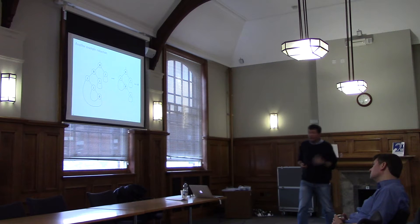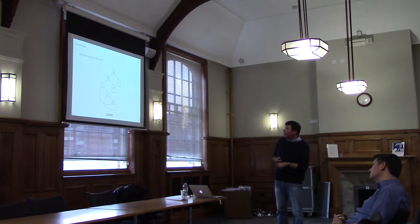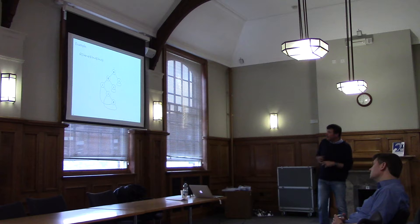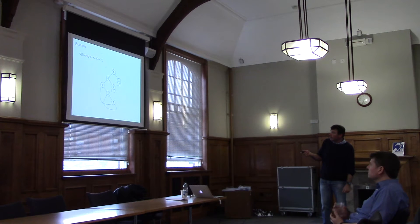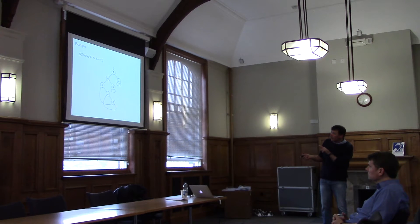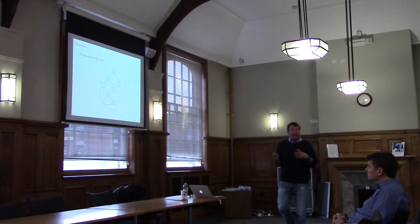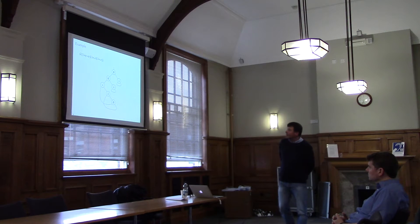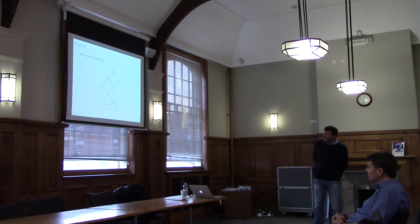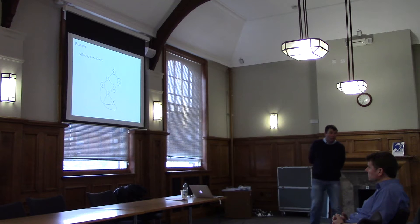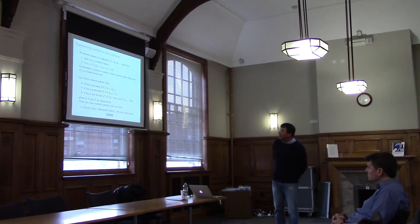Here's another example — a similar lambda term but with variables the other way around: lambda x lambda y, x applied to y. Swapping over those two things, we get x, y instead of y, x from the previous example. So I now have graphs representing lambda terms, and I'll use those later on when I want to explain what's happening in the numeral systems.